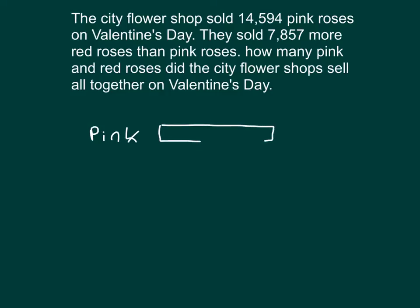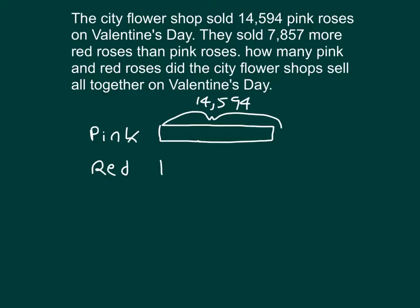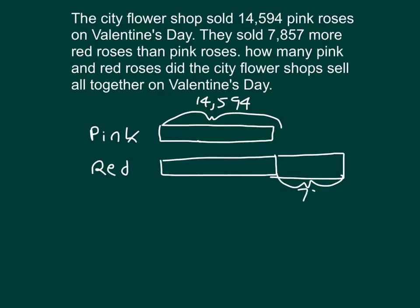The problem shows us that there are 14,594 pink roses, which we can go ahead and model. There's another type of rose being sold — red roses. It says they sold 7,857 more red roses than pink roses. So we have that same amount first, except there's actually more — 7,857 more than that initial amount of 14,594. So the total amount of red roses would be this number here.